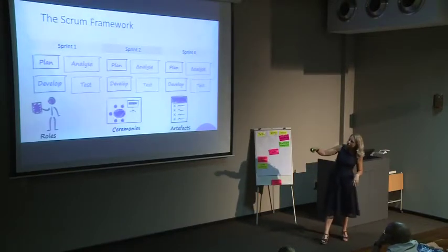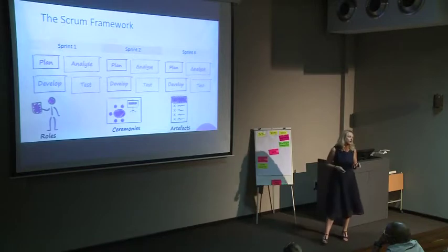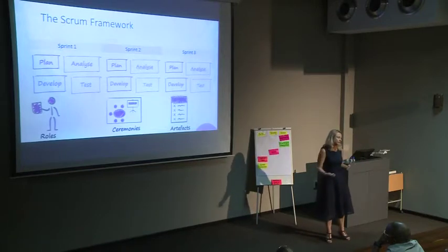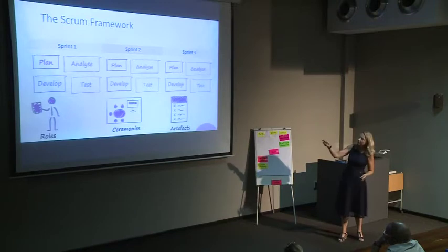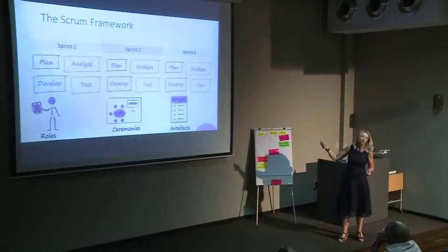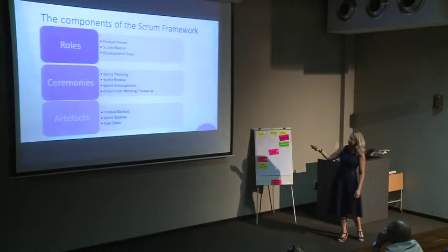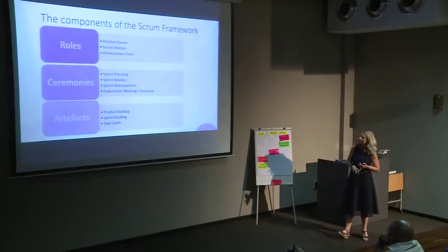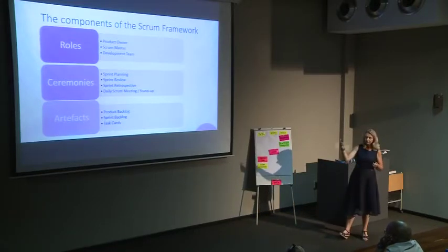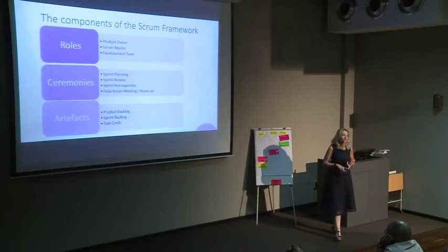The Scrum framework has your two-week sprint at the center. In every sprint there's planning, analyzing, developing, and testing — it's not upfront scoping and documentation before you start. You've got specific roles: product owner, Scrum Master, and development team. Specific ceremonies or meetings: sprint planning, sprint review, sprint retrospective, and the daily Scrum or stand-up. And artifacts: product backlog, sprint backlog, and task cards.